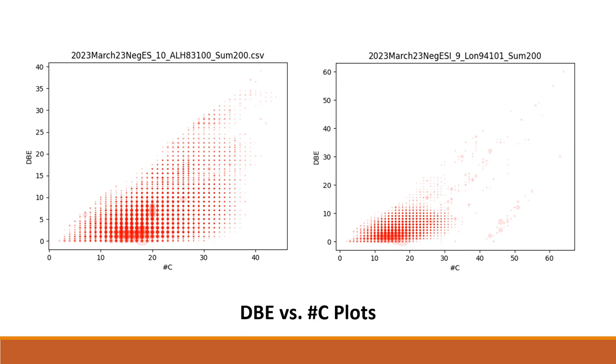This only covers a few of the plots that the team made using the mass spectrometry data. Venn diagrams, element counts versus mass-to-charge ratios, mass difference network plots, and many more visual representations of the data were compiled for later analysis.